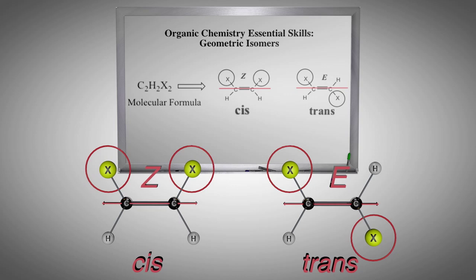Alternatively, the groups of priority can be on opposite sides of the imaginary line, called the trans isomer, often abbreviated E.